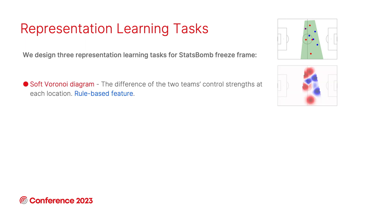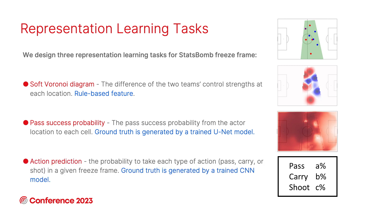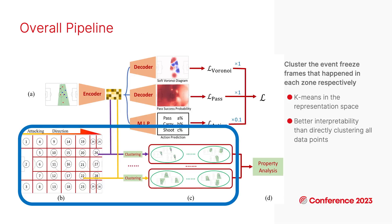Here are the three representation learning tasks. The first is soft volume diagram, which indicates the differences of the two teams in control strengths. The second one is pass success probability — the pass success probability of the on-ball player to other locations on the pitch. The final one is action prediction, which measures the probability of the on-ball player to take each type of next action. After training, the model learns meaningful representations at the bottleneck, and we use this bottleneck representation as the representation for these frames.